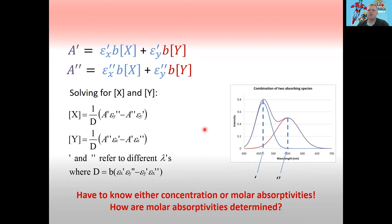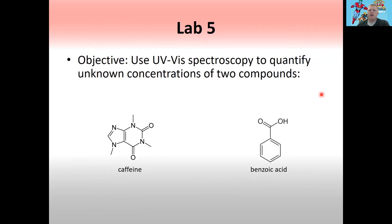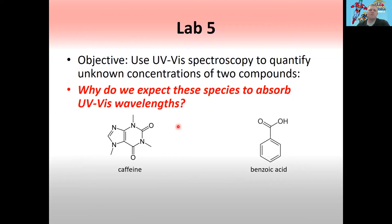In lab five, the objective is to learn how to use UV-Vis spectroscopy to quantify unknown concentrations of two compounds. The principles we learn actually apply to figuring out multiple compounds in a single mixture, but you won't have to do that. The two species we're looking for are caffeine, which is in most sodas, and benzoic acid. Both of these absorb light in the UV-Vis spectrum because they both have a lot of conjugation — they're both conjugated ring systems. Their conjugation is different, so their absorption spectra look different.